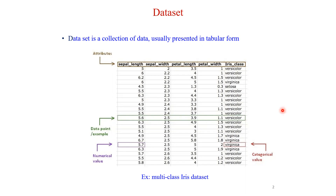This is the iris data set — iris is a flower and this is the data set belonging to that flower. Consider this observation: sepal length is 5.6, sepal width is 2.5, petal length is 3.9, and petal width is 1.1. Then that particular flower belongs to which class? It's versicolor — that particular flower belongs to the versicolor category.